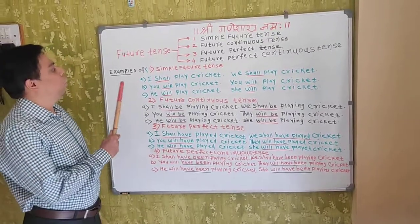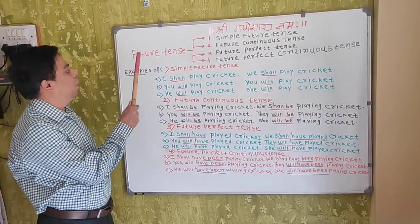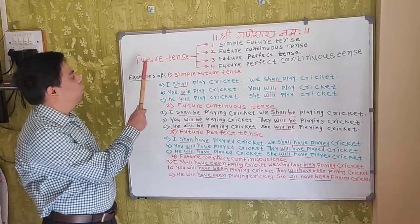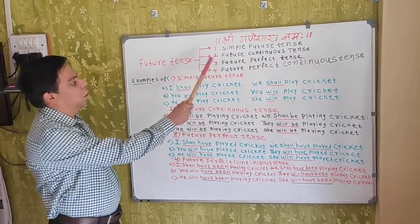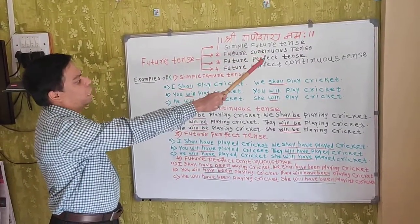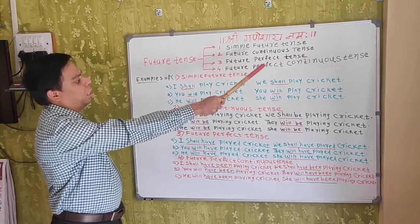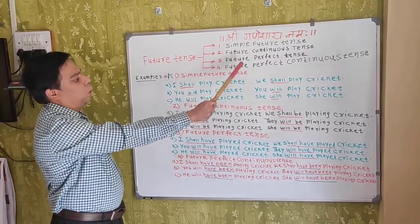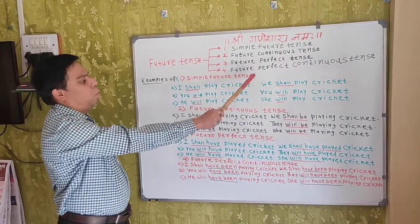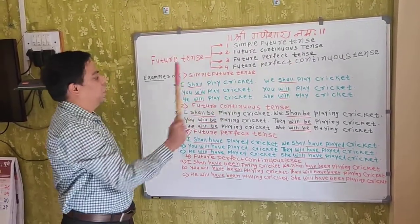Good morning students. Today we are going to learn some types of future tense. First, simple future tense. Future continuous tense. Future perfect tense. Future perfect continuous tense.